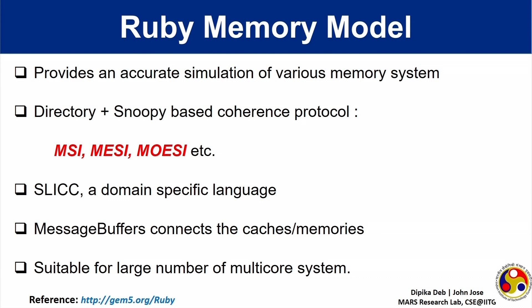On the other hand, the Ruby memory model provides an accurate and detailed simulation of various memory systems. It also has both snooping and directory-based coherence protocols, that is MSI, MESI, MOESI, and so on. The cache controllers in the Ruby model are implemented using a domain-specific language known as SLICC. The caches and memories are connected together using a spatial buffer known as message buffers.